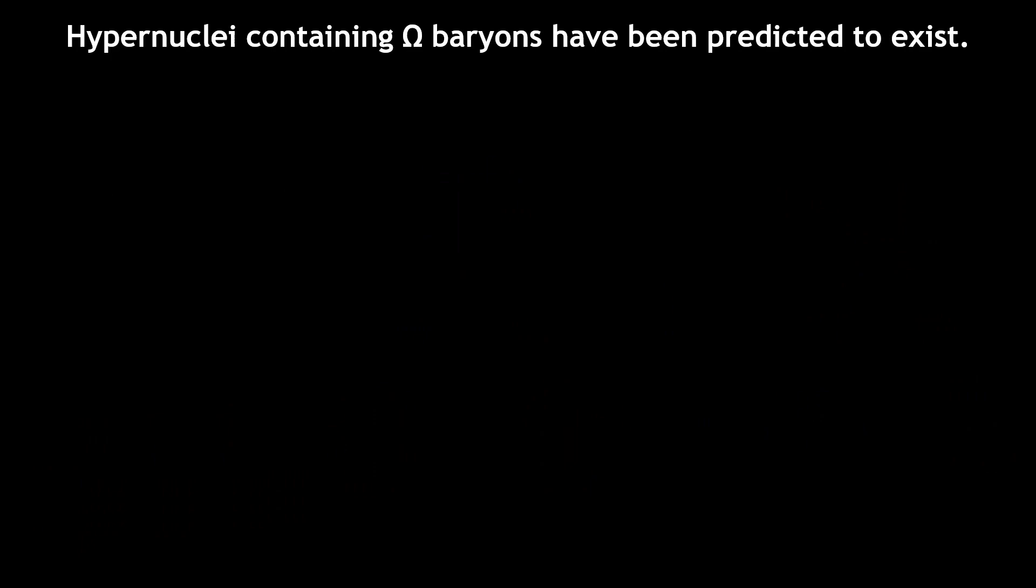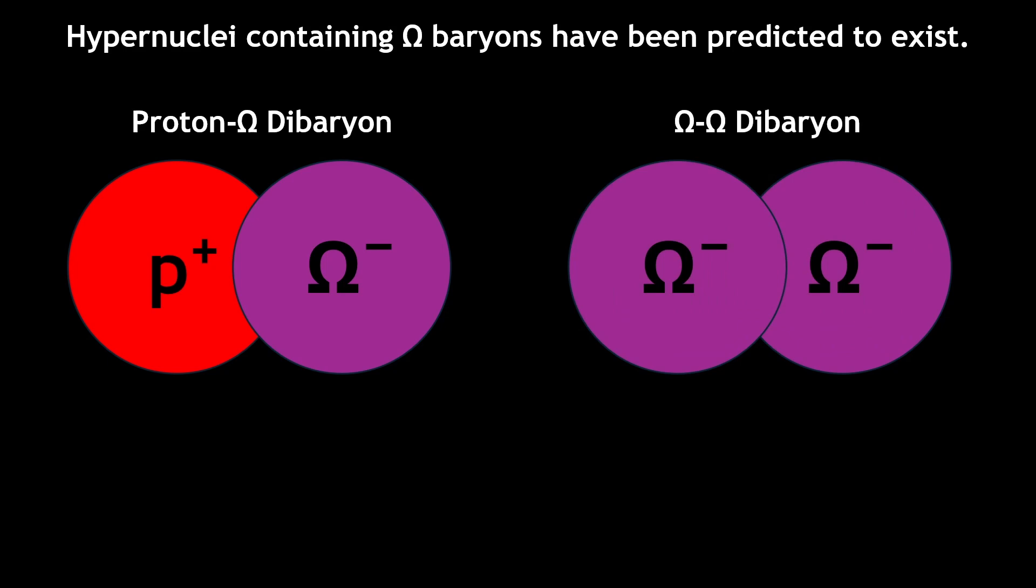Hypernuclei containing omega baryons have been predicted, particularly the proton-omega and omega-omega di-baryons, which are expected to be stable. However, no such hypernuclei have been observed.